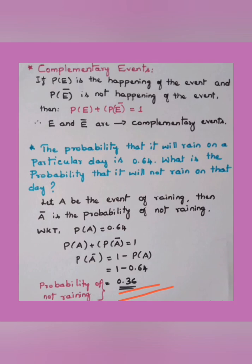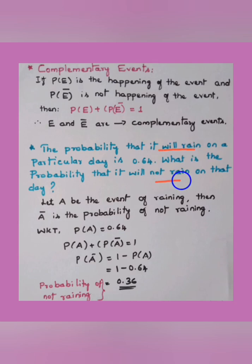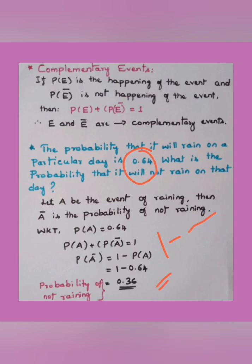For multiple choice questions, you don't need to write all the explanation. Just identify the two contradictory statements — which will rain and which will not rain, which is good and which is not good — then use the easy method: subtract the given value from 1 to find the unknown probability.